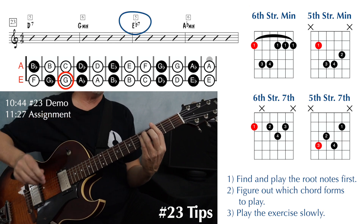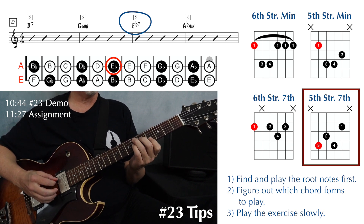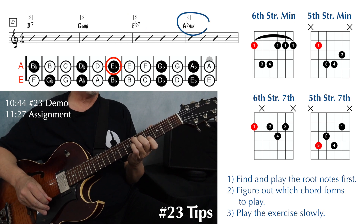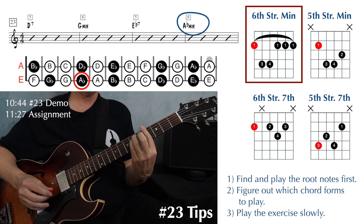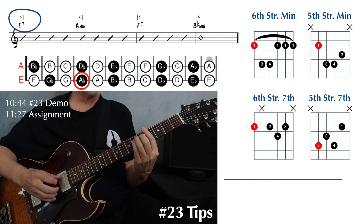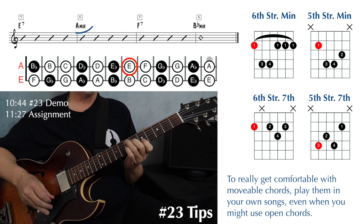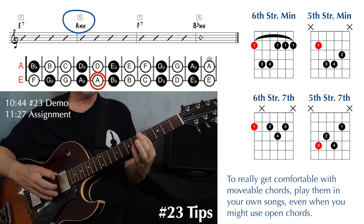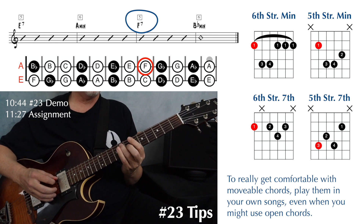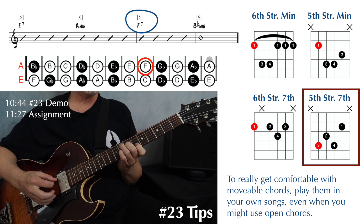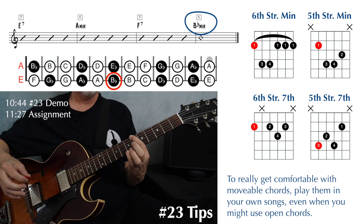Now we're going to be working our way up the fretboard. We have an E flat seven on string five — your E flat note on string five is at the sixth fret, using the fifth string dominant seven shape. And then we have an A flat minor on string six — finding your A flat note on string six, that'll be at the fourth fret, and that's the sixth string minor shape. Moving up to E seven on string five — that will be at the seventh fret for your root, playing the fifth string dominant seven shape. And then to an A minor on string six — your A note on string six is at the fifth fret, playing the sixth string minor shape. Then F seven on string five — your F note is at the eighth fret on the fifth string, with the fifth string dominant seven shape. And then B flat minor on string six — your B flat note on string six will be at fret six, with the sixth string minor shape.